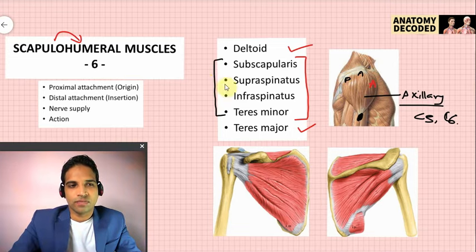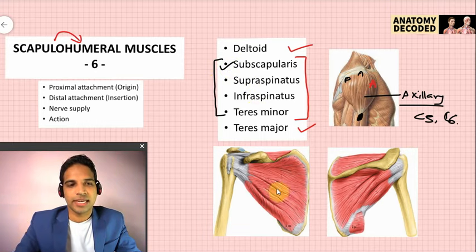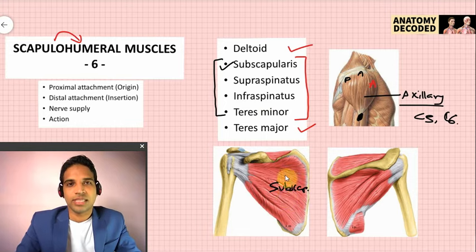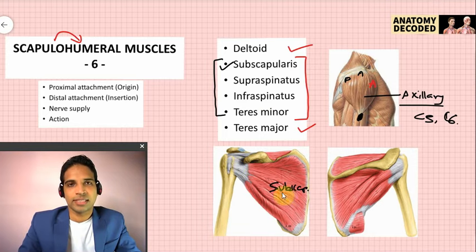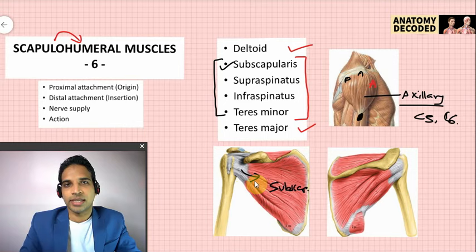The four rotator cuff muscles: subscapularis is seen on the anterior aspect, while the other three are on the posterior aspect. Subscapularis arises from the subscapular fossa and gets attached along the lesser tubercle of the humerus. The nerve supply of subscapularis is the upper and lower subscapular nerves. Its action is medial rotation at the shoulder joint.